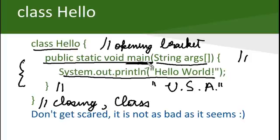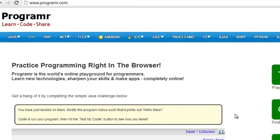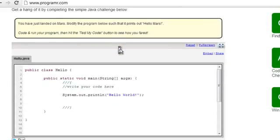So, let us now actually write this program and run it and see how it looks. Let us proceed to programr.com. What you are looking at is programr.com. Here you can actually write your code directly in the browser and run it.